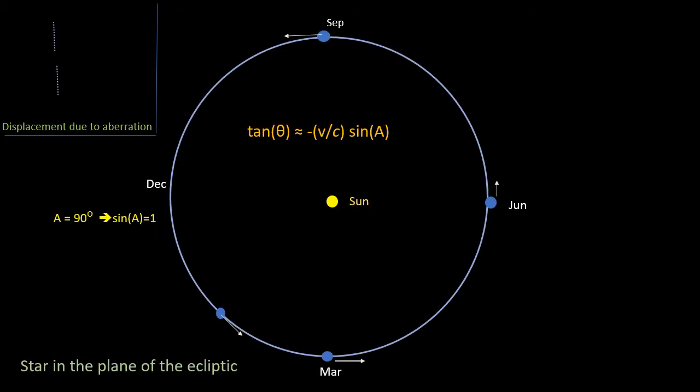So far, the examples we've talked about have been where the star is at right angles to the plane of the Earth's orbit. This diagram shows the stellar aberration of a star which lies in the same plane as the Earth's orbit, the ecliptic. And in this case, imagine we're looking down from above on the Earth's orbit.